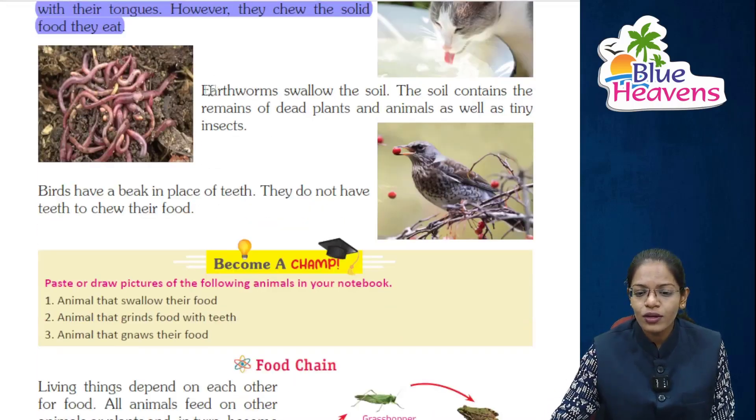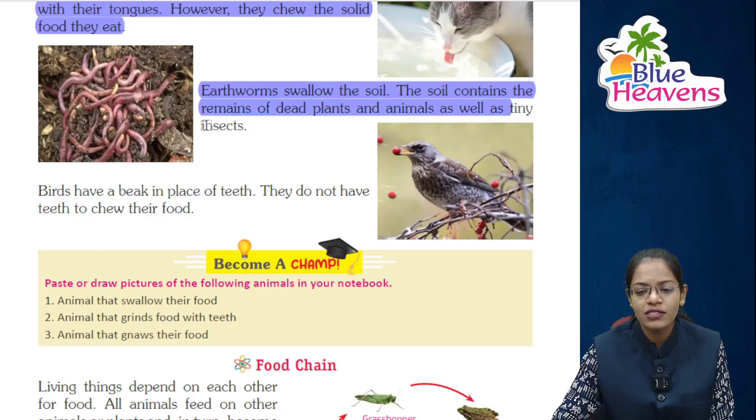Earthworms swallow soil. The soil contains the remains of dead plants and animals as well as tiny insects.